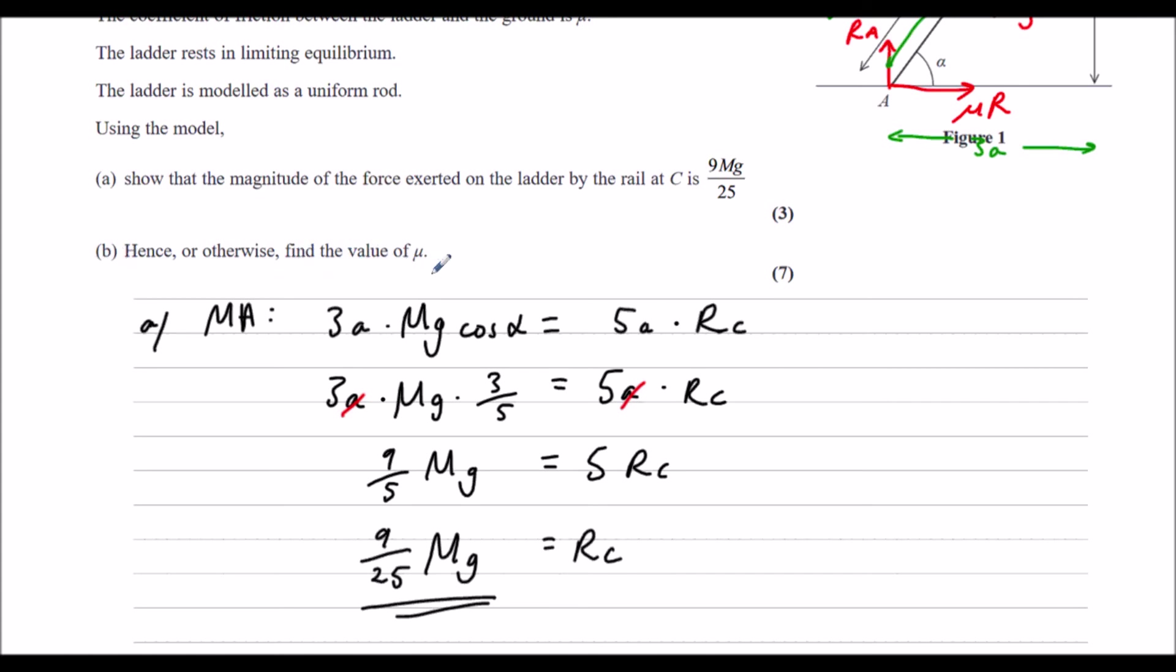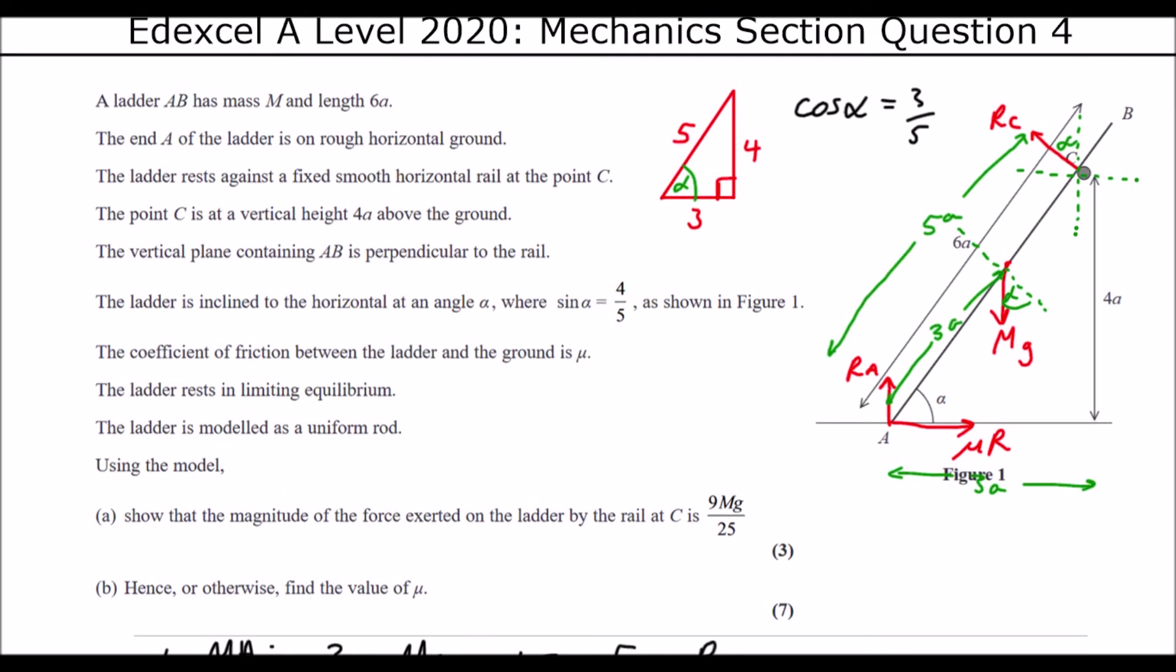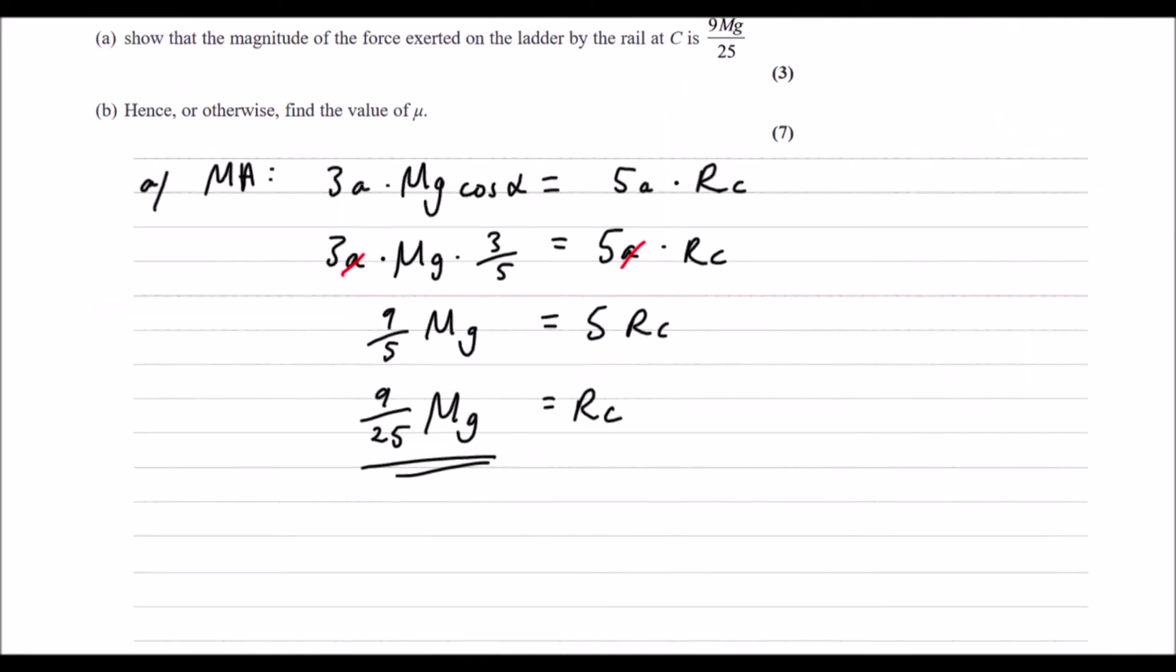Hence or otherwise, find the value of mu. So now we know the reaction at C. We're going to need to find the normal reaction at A. So we'll do forces up equal forces down. And then we'll be able to do forces left equal forces right to find mu.